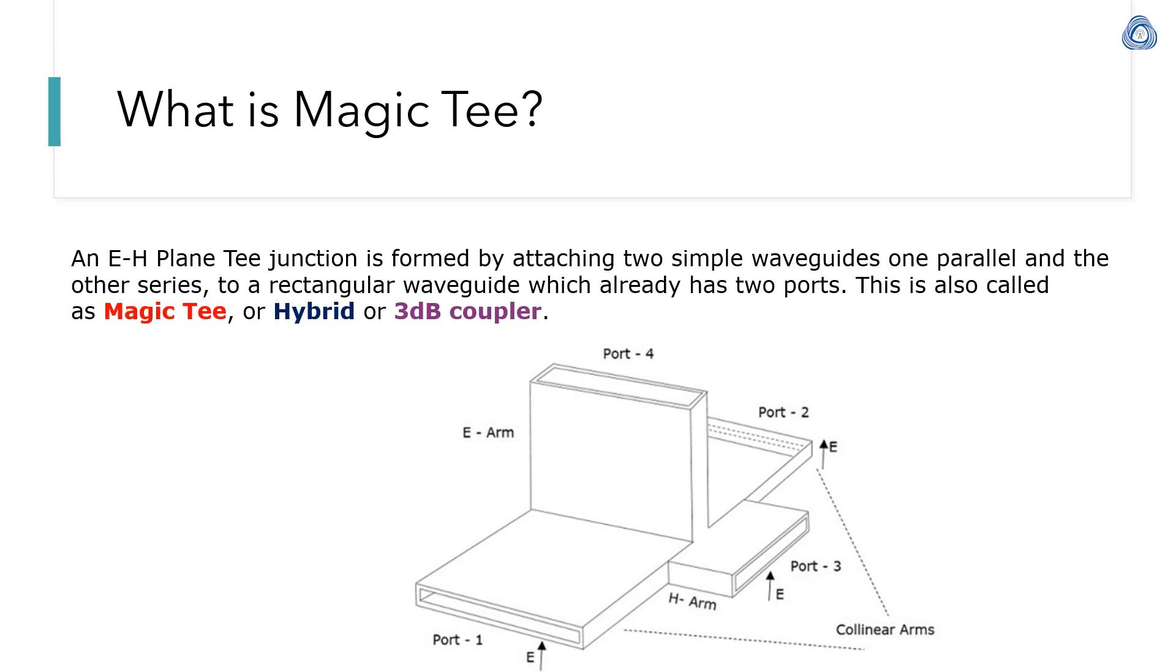The first thing is what is magic T. Magic T is an E and H plane T junction formed by attaching two simple waveguides, one parallel and the other series, to a rectangular waveguide which already has two ports. The resultant structure has four ports: port 1, port 2, port 3, and port 4. This is also called magic T, hybrid T, or 3 dB coupler. Port 1 and port 2 are collinear arms, port 3 is the H arm, and port 4 is the E arm.